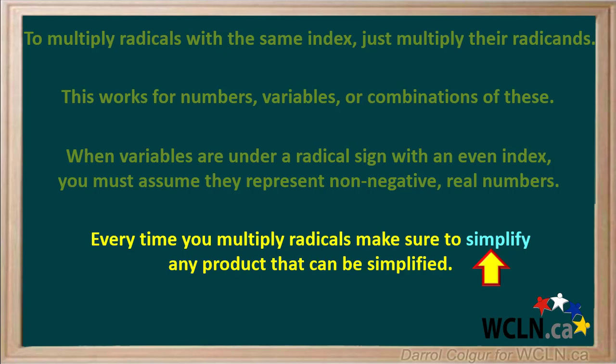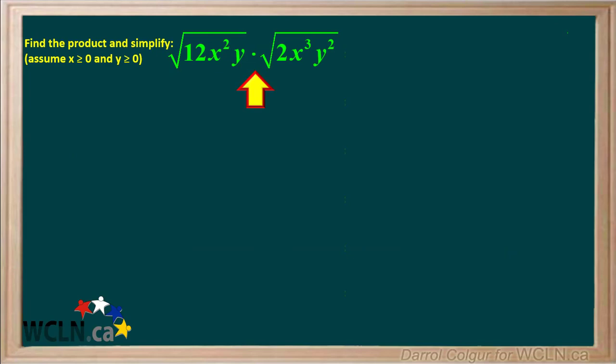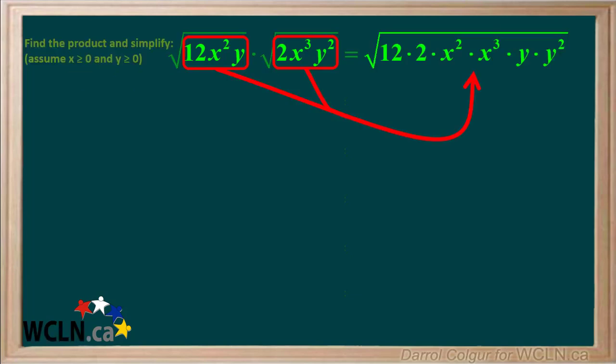Let's do an example. We're asked to find the product of these two radicals containing numbers and variables. Because variables x and y are under a square root radical, we must assume they are non-negative. When we multiply two radicals, we multiply the radicands, so everything in the two radicals is now under one radical sign. Notice we group the numbers together, the x's together, and the y's together.